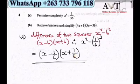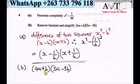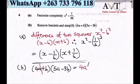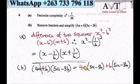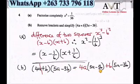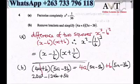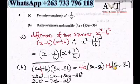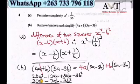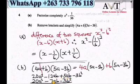Part B: we expand (4a plus b)(5a minus 3b). We multiply each term in the first bracket by the second bracket: 4a times (5a minus 3b) plus b times (5a minus 3b). Expanding gives 20a squared minus 12ab plus 5ab minus 3b squared. Grouping like terms: 20a squared minus 7ab minus 3b squared.